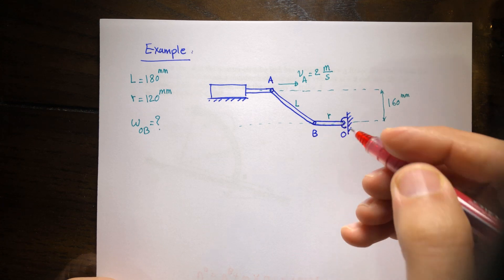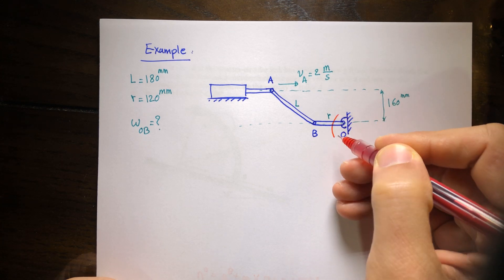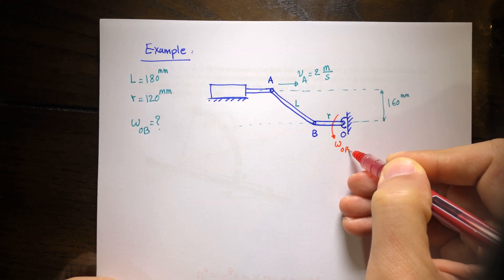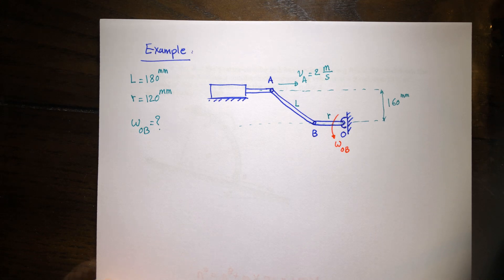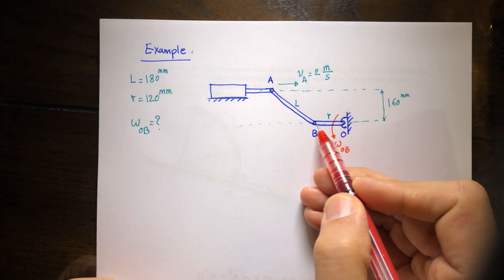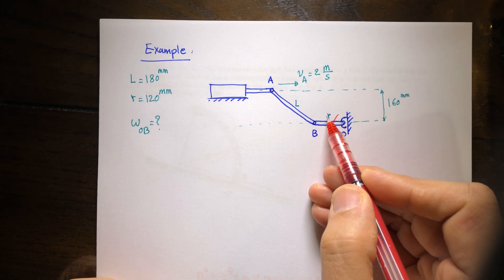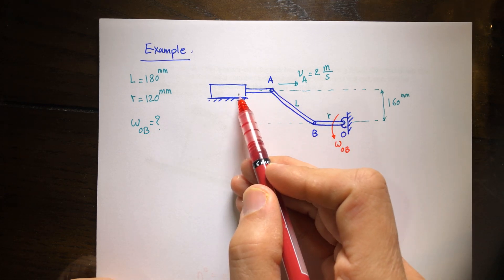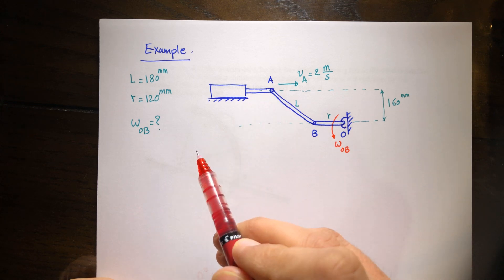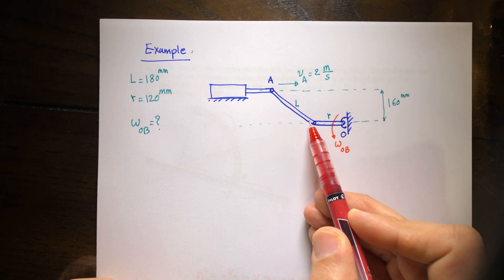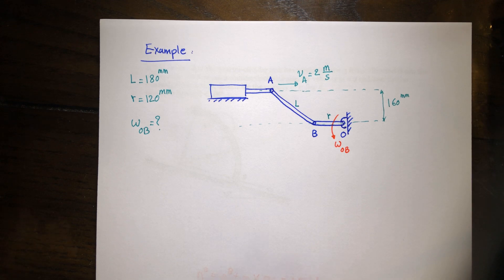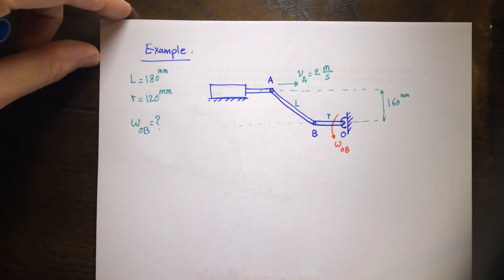The question is: if the velocity of A is two meters per second, what is the angular velocity of this link? Let's assume it rotates in this direction. The question is: what is omega OB? The length of OB is R, and at this moment it is in the horizontal direction. The cylinder is also in the horizontal direction, and we know the geometry — we know the length L and also R.